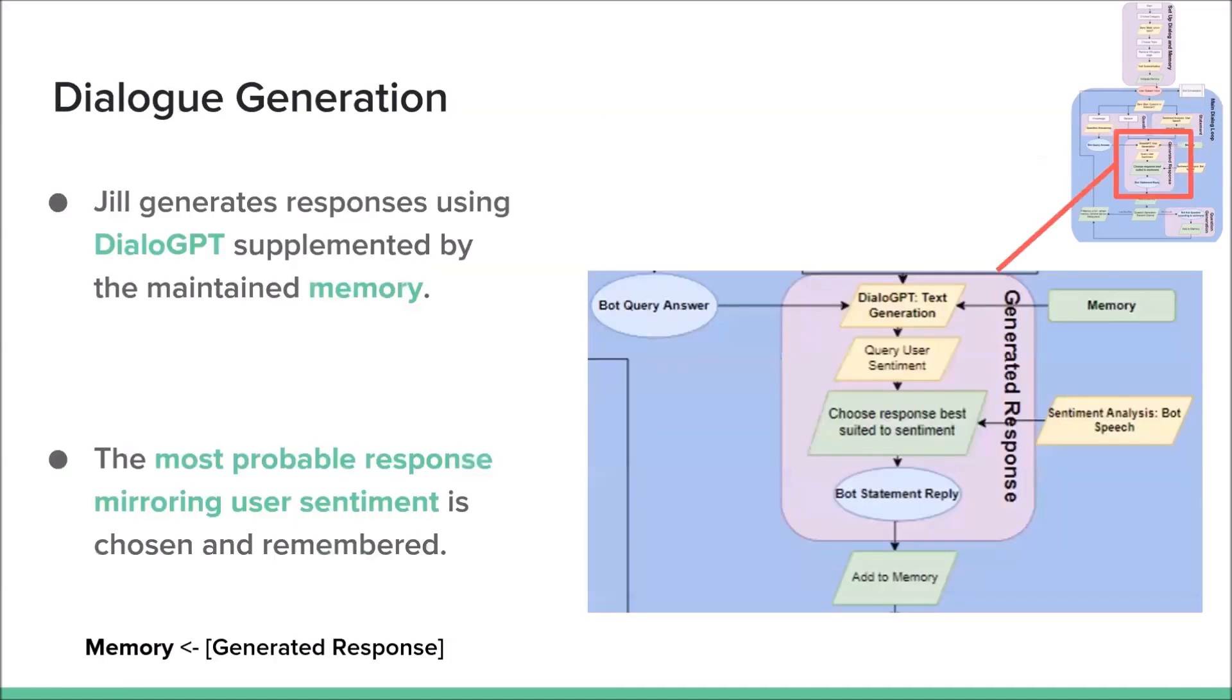Jill then generates dialogue regardless of the route we've come from. So if we asked a knowledge question, Jill will create a follow-up response to that, likewise for a statement. If we asked a general question, the answer will be generated here.